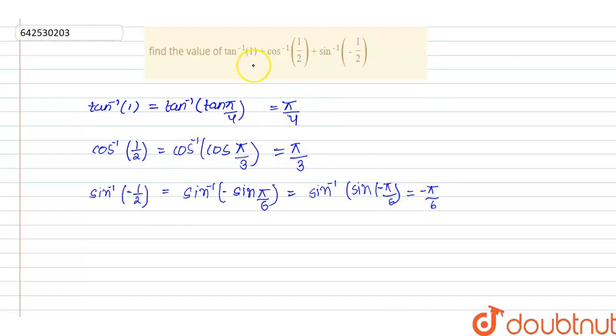Now we put all the values in the given equation. So add all of them. Here, that is, pi by 4 plus pi by 3 minus pi by 6. And this will be equals to,